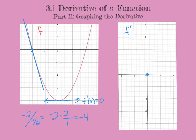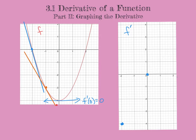Now I'm going to draw the tangent line when x is negative one. The tangent line touches at one point and measures the instantaneous rate of change there. Going from point to point, we're going down one and only over one half of a unit. So the slope there is negative one divided by one half, which is negative two.